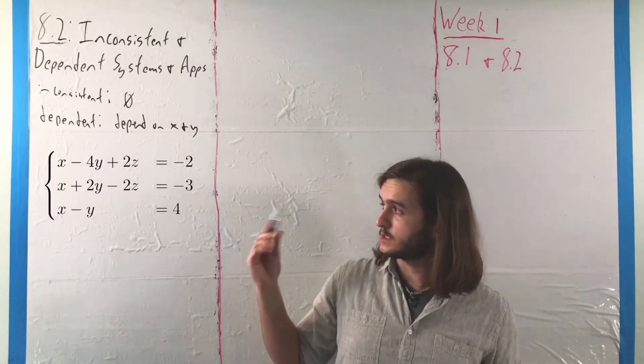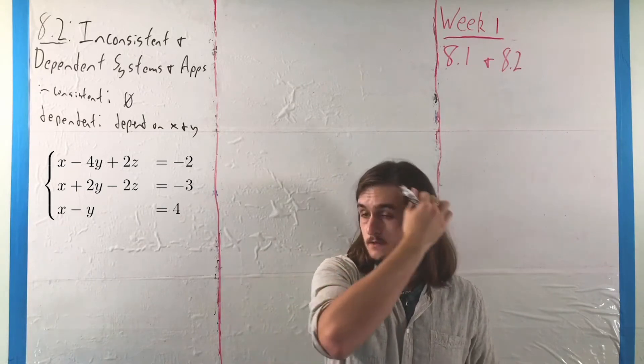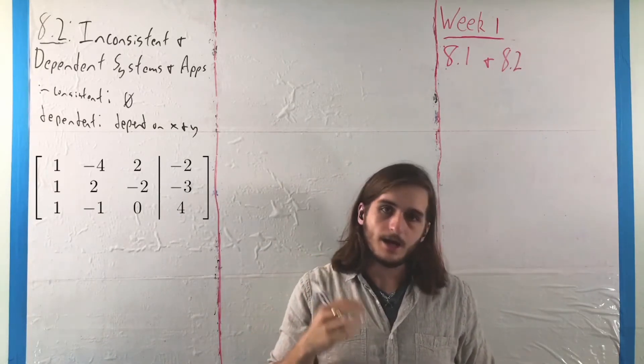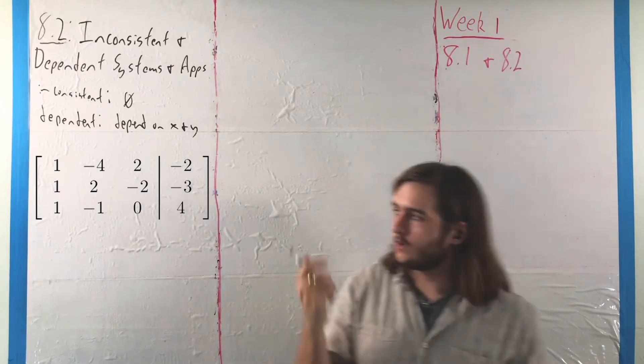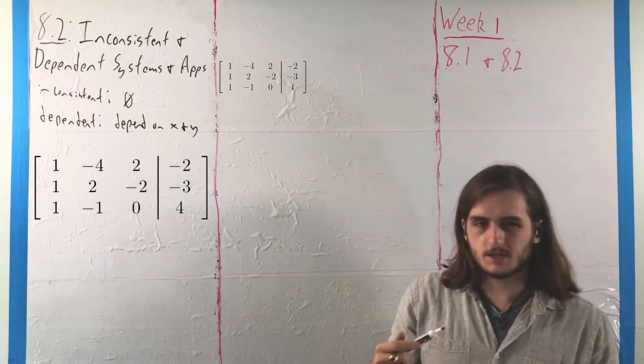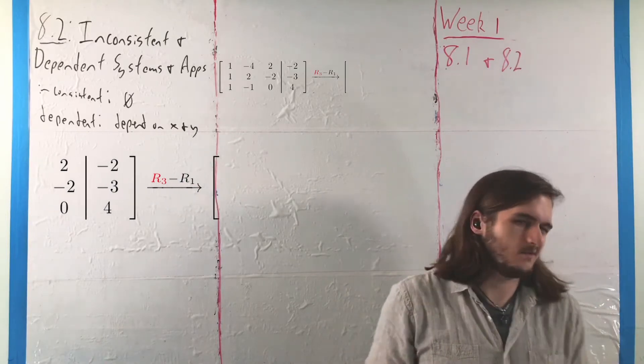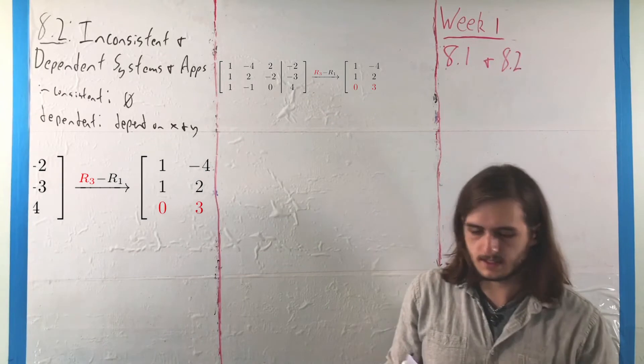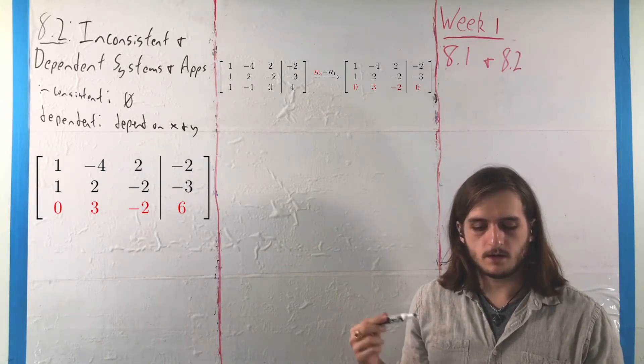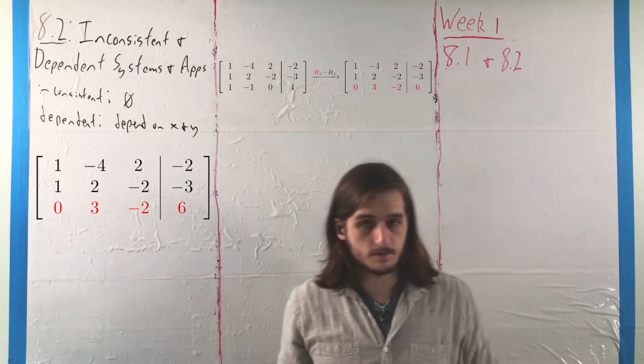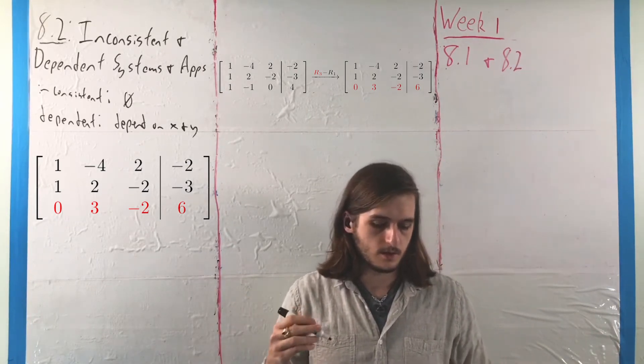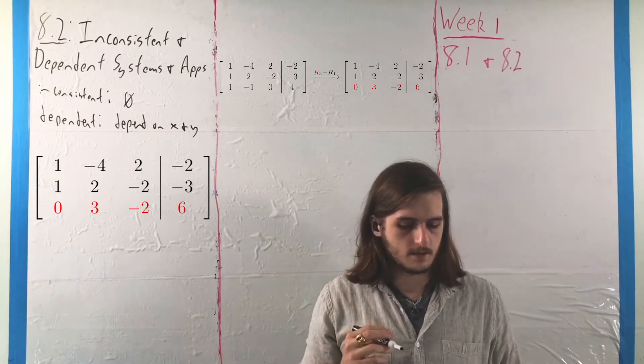We can start by taking that system and converting it into an augmented matrix like we do with Gaussian elimination, and then we're going to apply some row operations going through carefully. First, because we have all 1s to begin with, we've got plenty of options. We'll just keep things as they are more or less. We're going to subtract row 1 from row 3 and row 2 in succession to get down to two 0s in the first column.